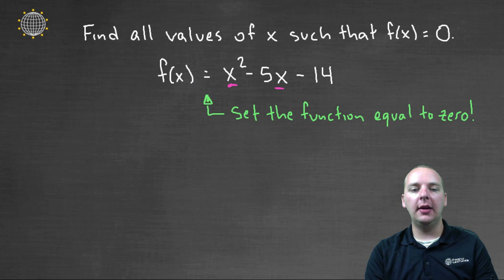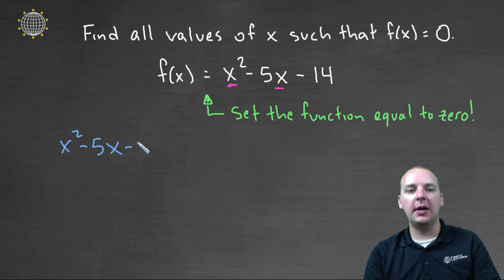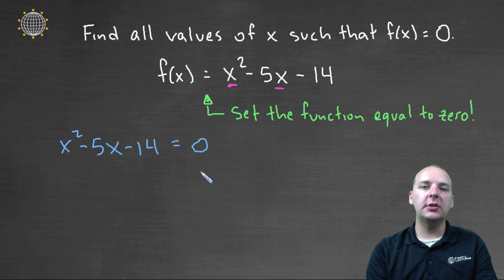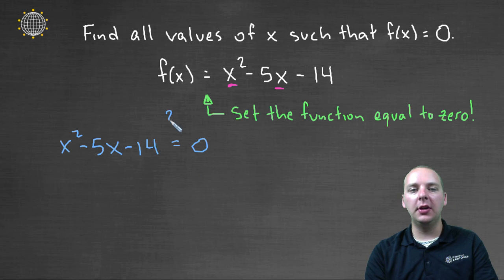And so when you take, for example, x squared minus five x minus fourteen, and you set it equal to zero, this is almost like asking a question. You could even put a question mark. What x would make this entire thing, which is f of x by the way, what x value would make this equal zero?